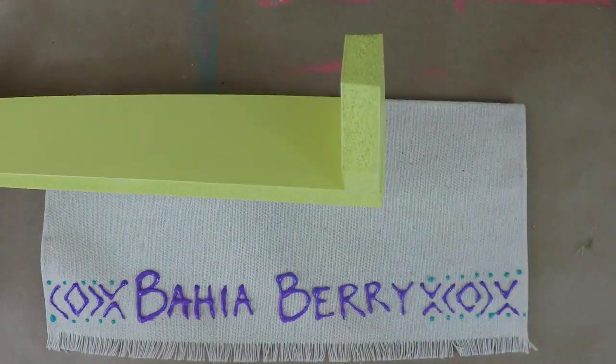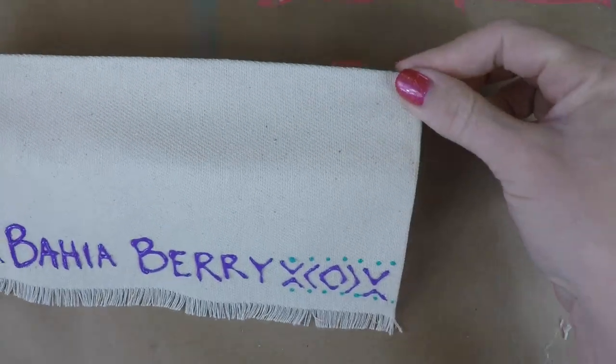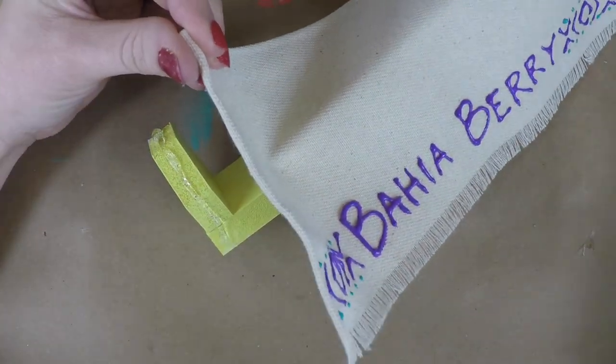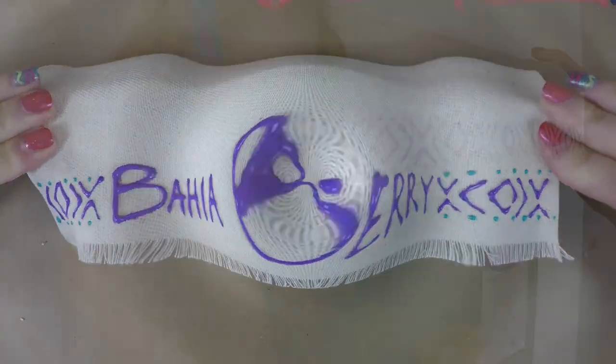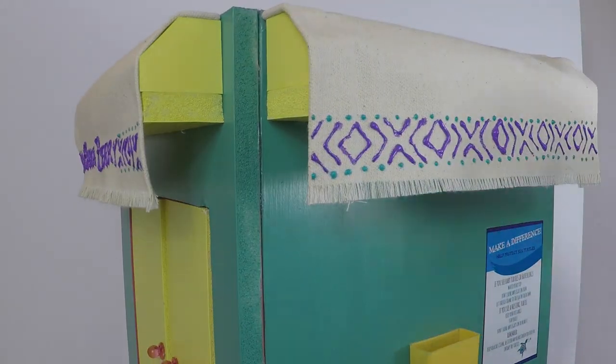Once the puffy paint is dry on the canvas, you can now hot glue it straight onto the awning support. Glue the awnings directly on the outside of the fruit stand.